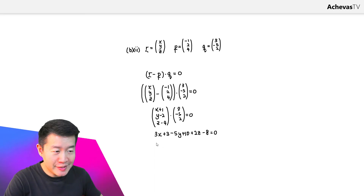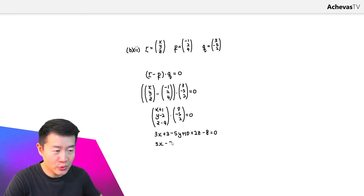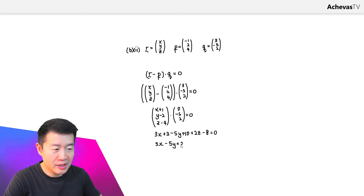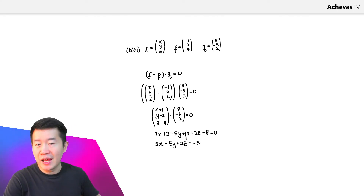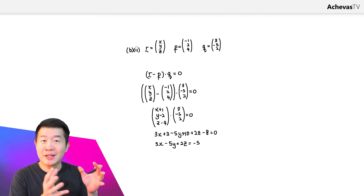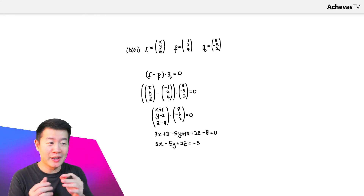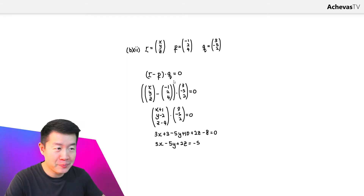Re-expressing and evaluating, we get 3x minus 5y plus 2z equals minus 5. This gives us the relationship between x, y, and z.